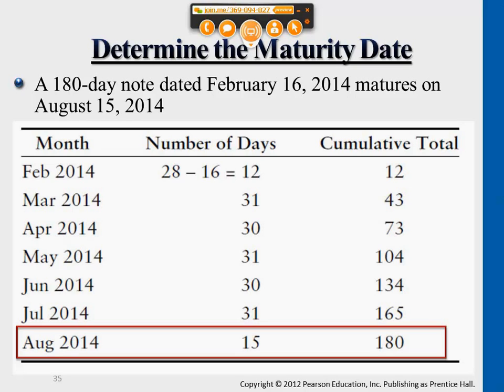The following month, March, there are 31 days. 31 added to 12 gives you 43, and so on and so forth. When it reaches the end of July, you reach the point of 165 accumulated days.